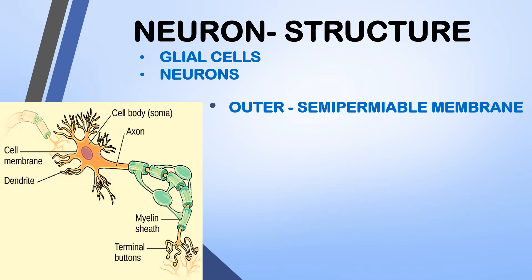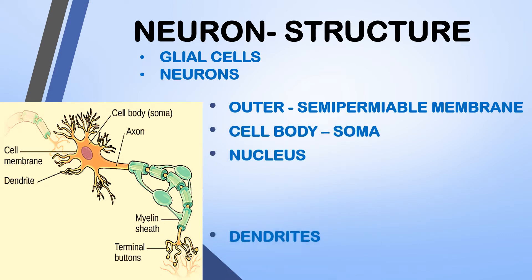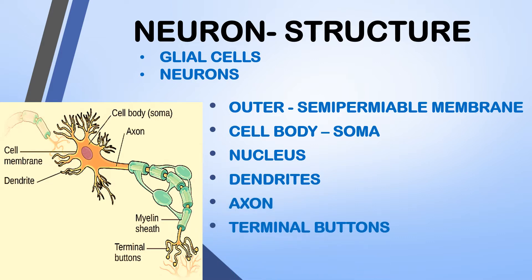The neuron has an outer semipermeable membrane, a cell body or soma, nucleus, dendrites, axon, terminal buttons, and myelin sheath. The outer semipermeable membrane is the cell membrane. It is called semipermeable because it allows only smaller molecules and molecules without electrical charge to pass through it. It stops or doesn't allow large particles or charged molecules to pass through.